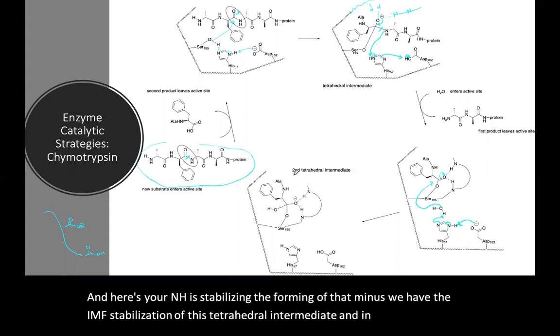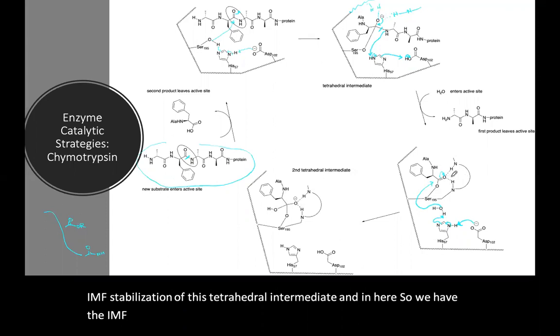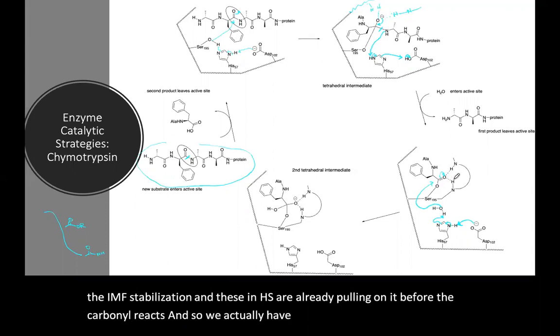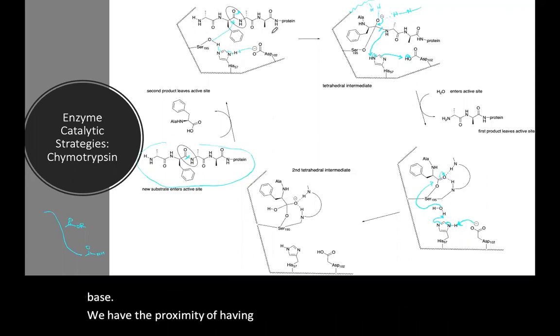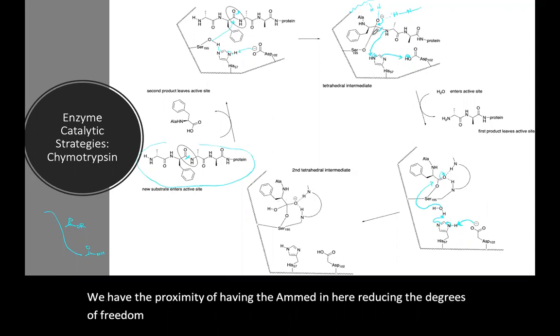So we have the IMF stabilization and these NHs are already pulling on it before the carbonyl reacts. And so we actually have here the distortion and the IMF stabilization. We have the acid base catalysis here we're forming a better base. We have the proximity of having the amide in here reducing the degrees of freedom. And then we've done the group transfer. We've transferred from an amide to an ester so that's more reactive.